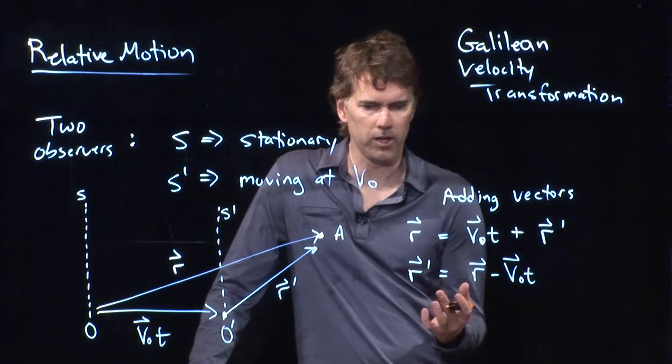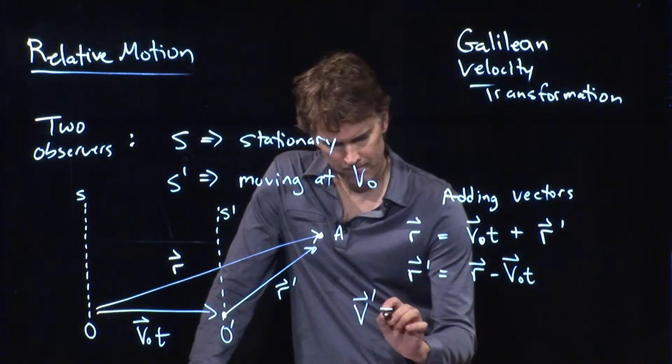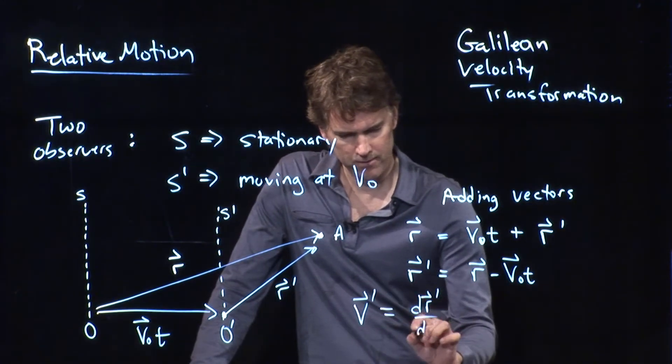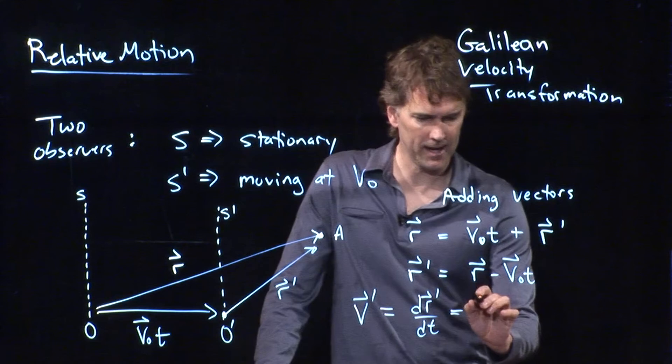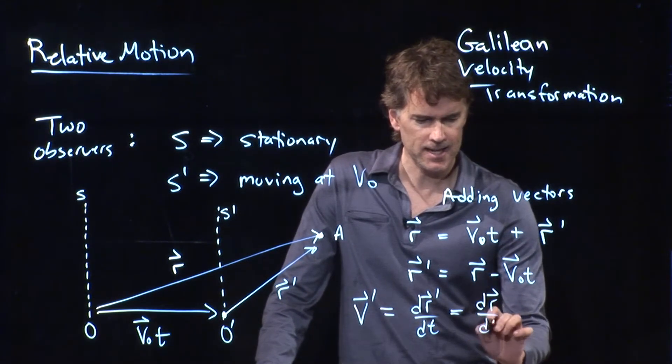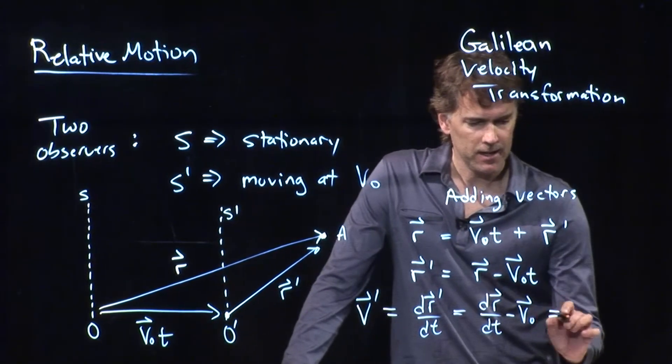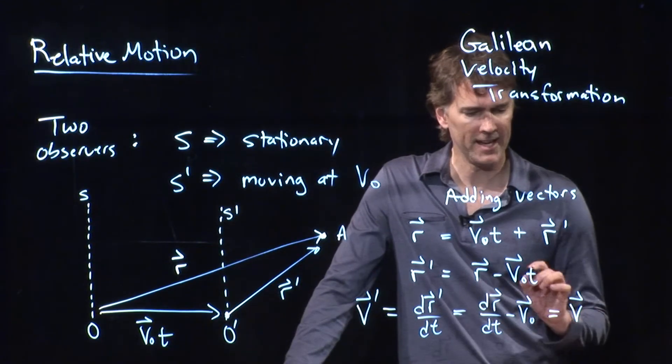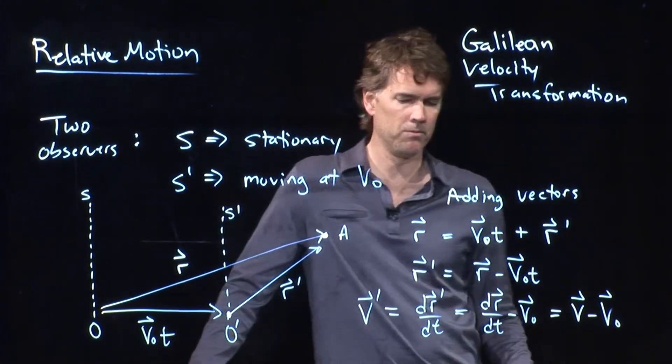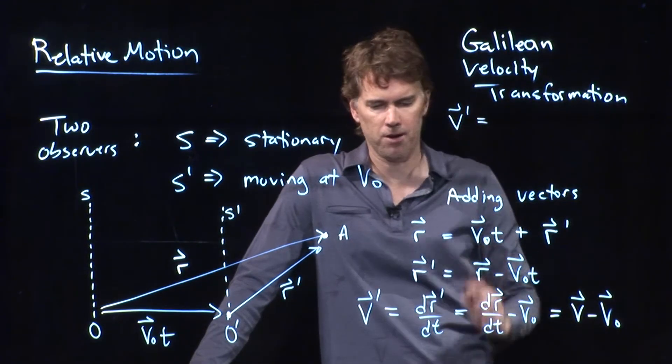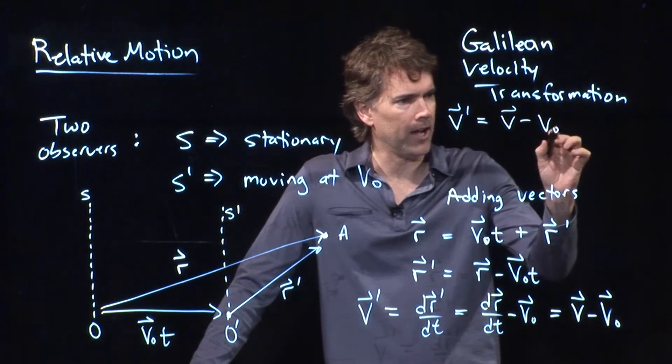And now you can solve for V. What is the velocity observed in the moving frame? It's just the derivative of R prime with respect to T. And so I need to take a derivative of this thing. What do I get? I get dR/dT minus V-naught. But dR/dT is just the speed observed in the stationary frame. And so this is the Galilean velocity transformation. What is the velocity observed in the moving frame? It is the velocity observed in the stationary frame minus the velocity of the moving frame.